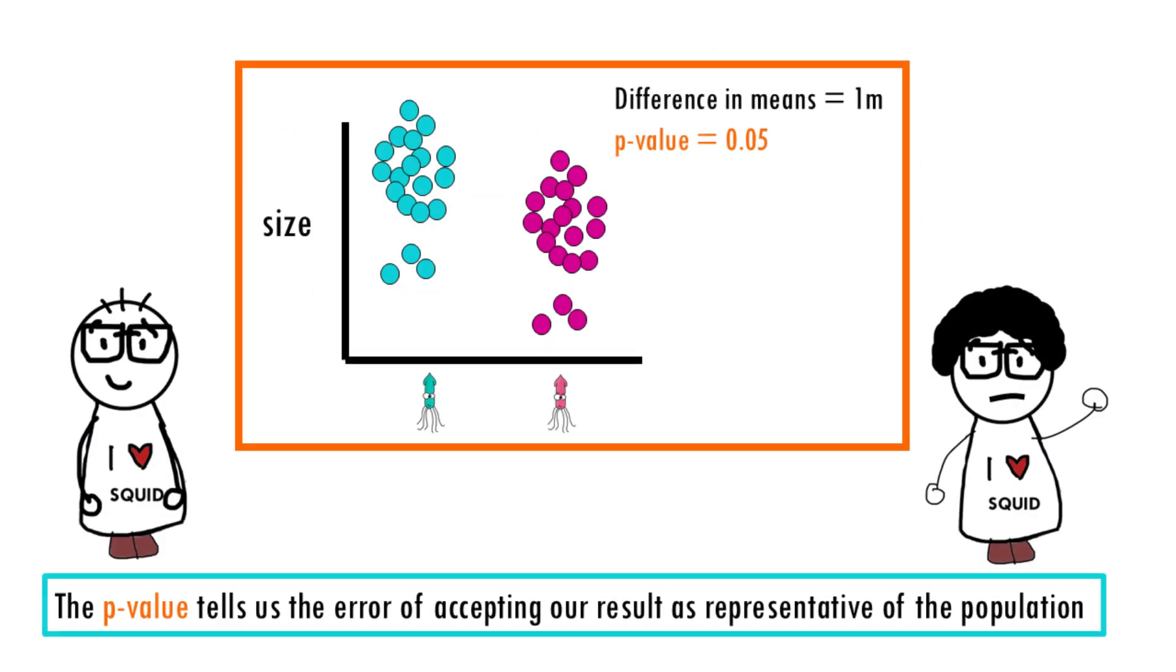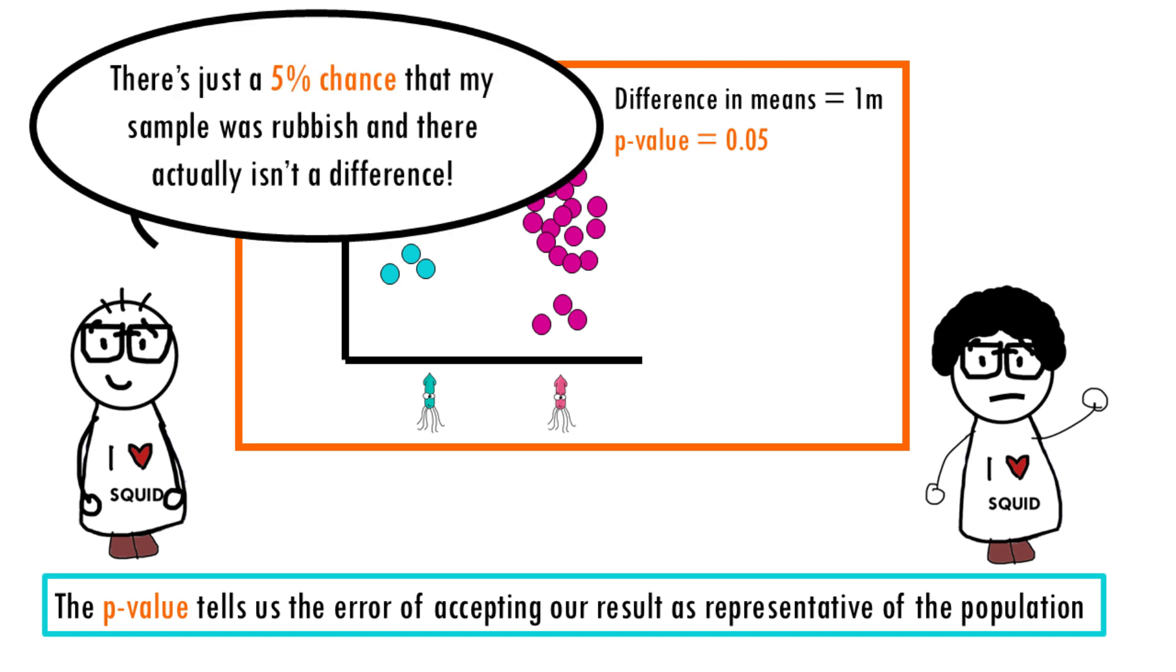With a p-value of 0.05, there is a 5% chance that in our experiment, our squid expedition, we were really unlucky and fished big male squids and small female squids. 5% probability that the difference in means found in our sample is a fluke.